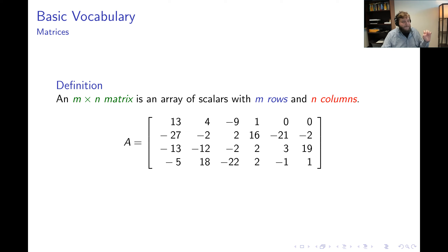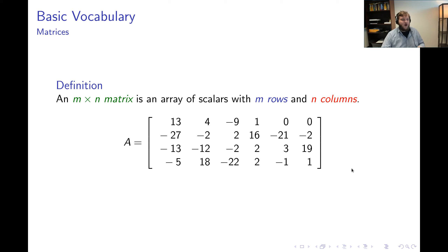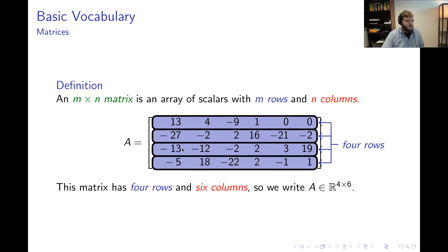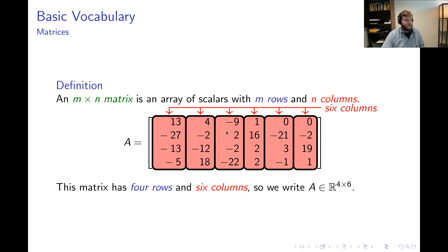By definition, an M by N matrix is an array of scalars organized into M rows and N columns. Here's our first example — a grid of numbers organized into rows and columns. This particular matrix has four rows and six columns, so we use membership notation to write A ∈ ℝ⁴ˣ⁶. The times symbol here doesn't mean multiplication; it indicates rows by columns.